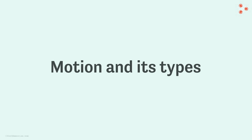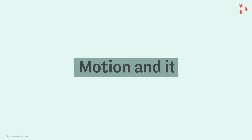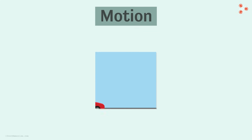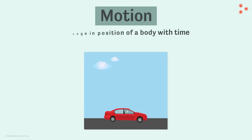In our earlier grades, we have studied motion and its types. Let's have a quick review. In simple words, if a body is moving, it's described as motion. In slightly more technical words, motion is defined as a change in the position of a body with time.